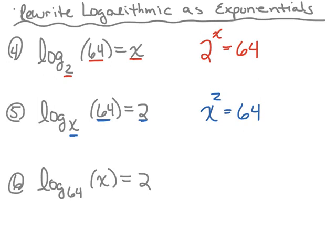Number six, let's rewrite that one as an exponential. The first thing we need is the base, which is sixty four. Now we need the exponent — the exponent is two — and it equals the argument, which is x. Therefore we end up with the exponential sixty four squared equals x.